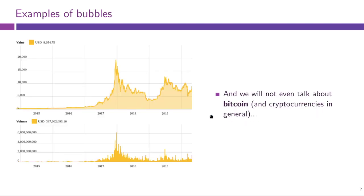Another even more recent example is the Bitcoin and cryptocurrency bubble. The chart of the Bitcoin price shows just what Investopedia describes — a sudden surge in price followed by a sharp drop. That was a notable event, and these are all very household examples of bubbles that you are likely already familiar with.